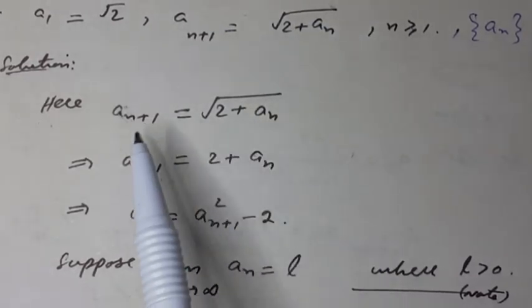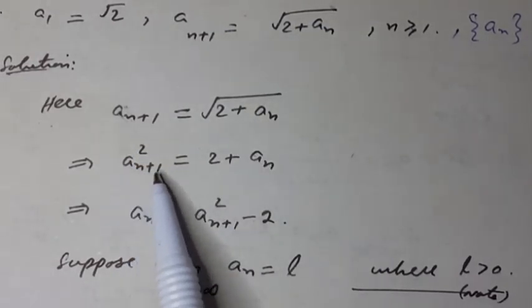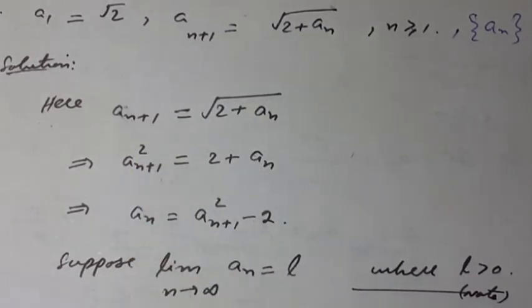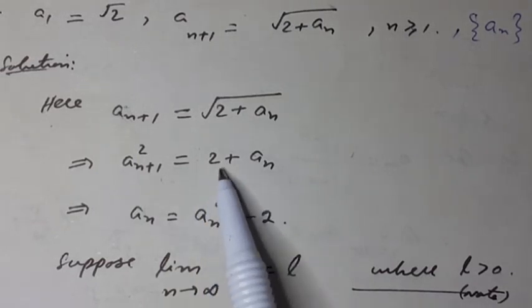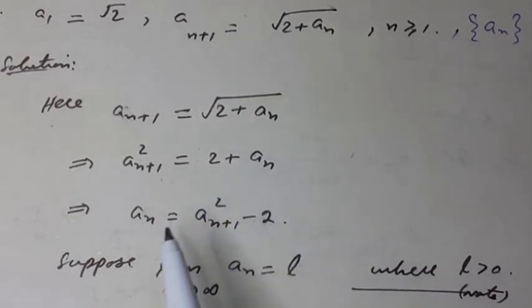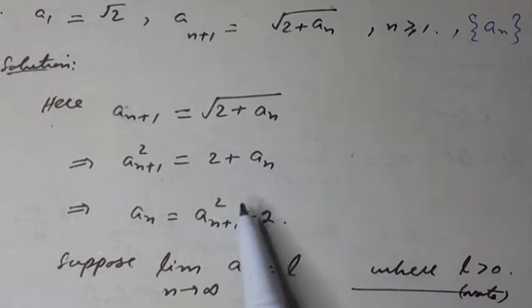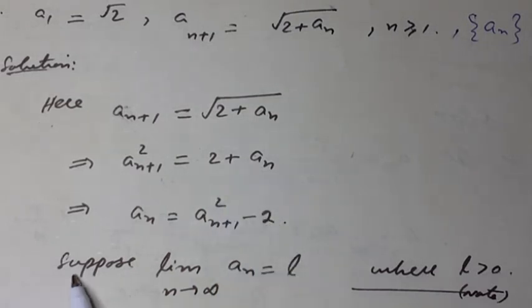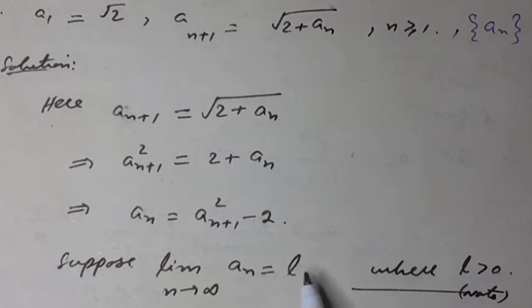Squaring on both sides, we have aₙ₊₁² is equal to 2 plus aₙ. This can be written as aₙ is equal to aₙ₊₁² minus 2.